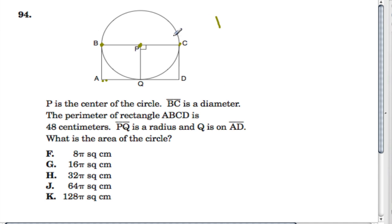Problem right here, we know that P is the center of our circle, and we know that BC is a diameter, and that the perimeter of our rectangle ABCD all the way around the perimeter is 48 centimeters.